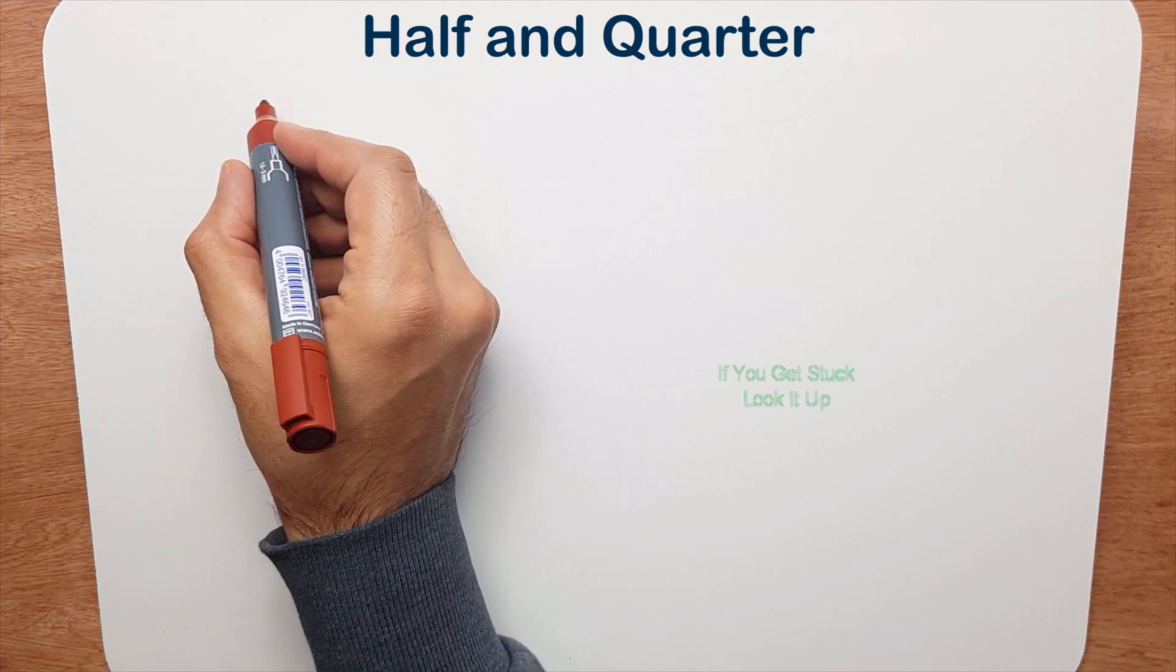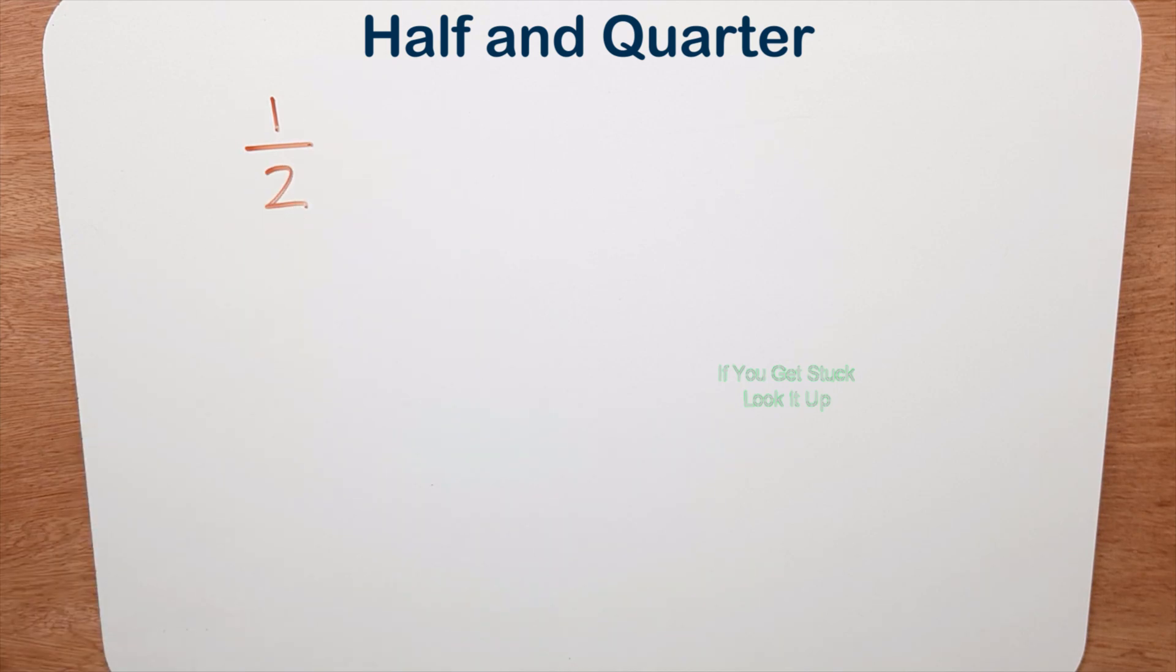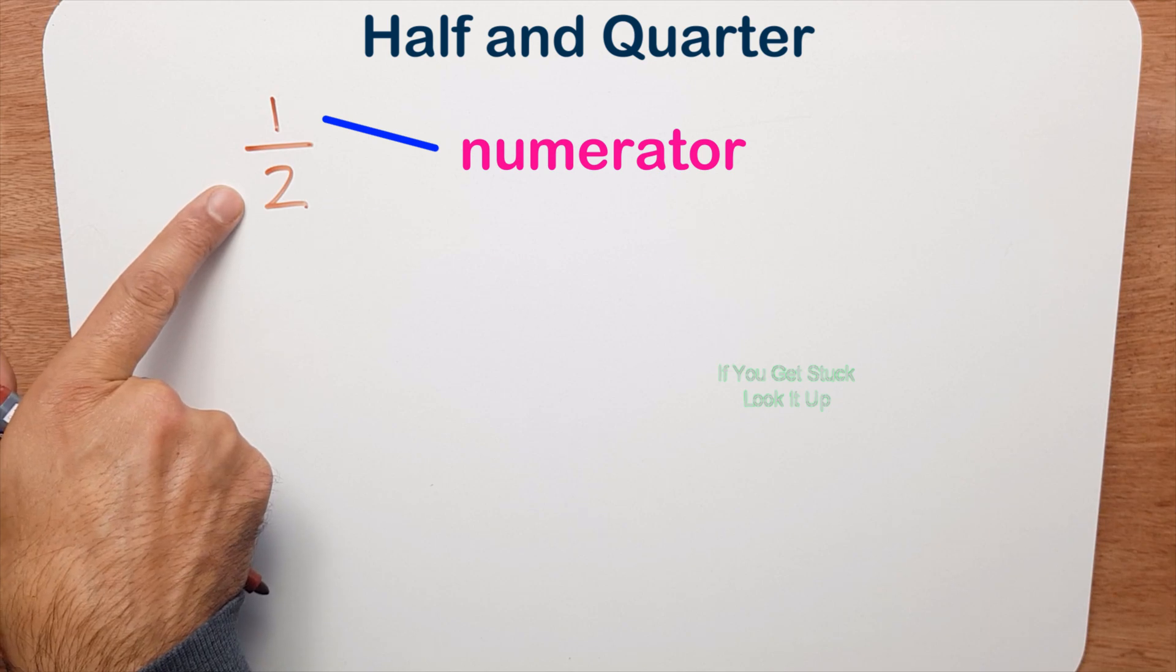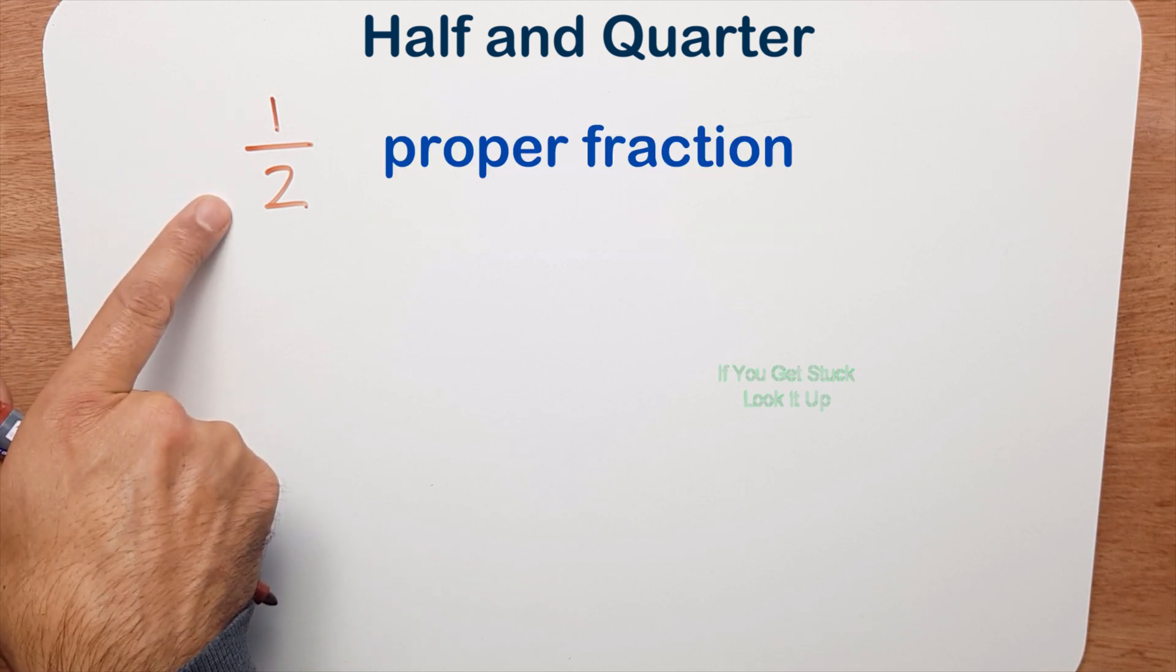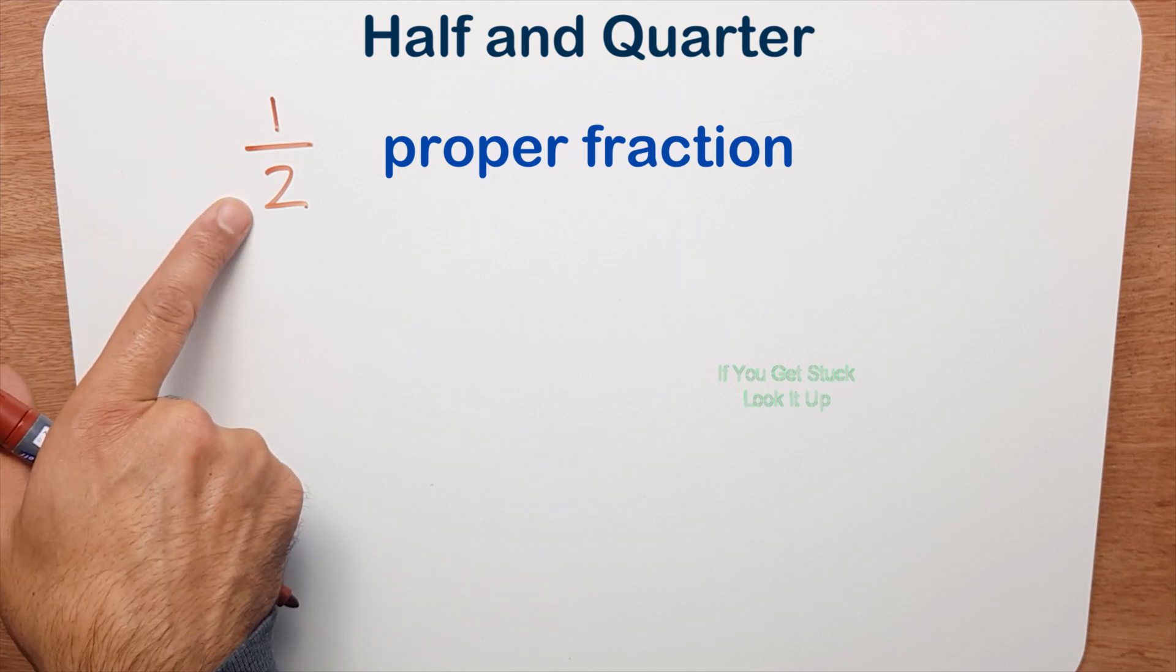But before I go ahead what I want to do is just look at what we've already done. So here we have a fraction. The top part is called a numerator, the bottom part is called a denominator. Now this is a proper fraction because the numerator is smaller than the denominator.